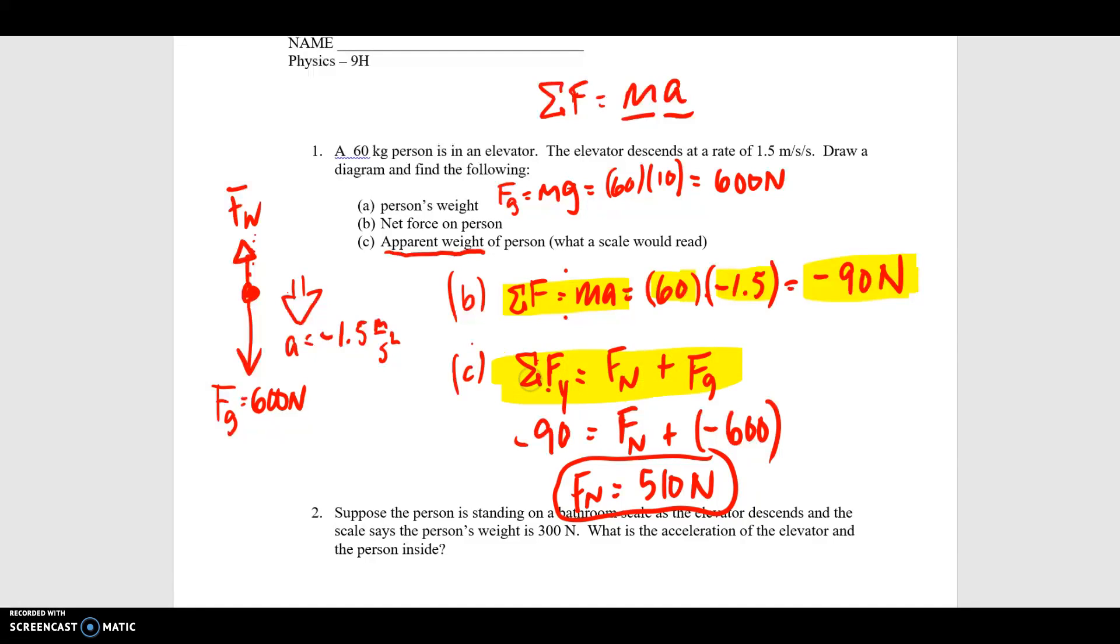Then using a net force equation, filling in what we know and what we don't know. We know the net force, we know the gravitational force, we can figure out the normal force, what the scale reads. If the person were on a scale in this elevator, it would read 510 newtons instead of 600 newtons, which is their actual weight. This is the apparent weight.